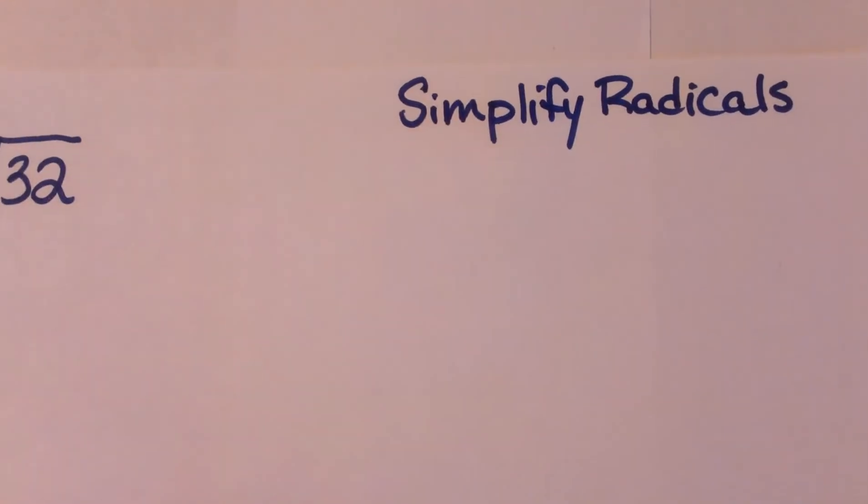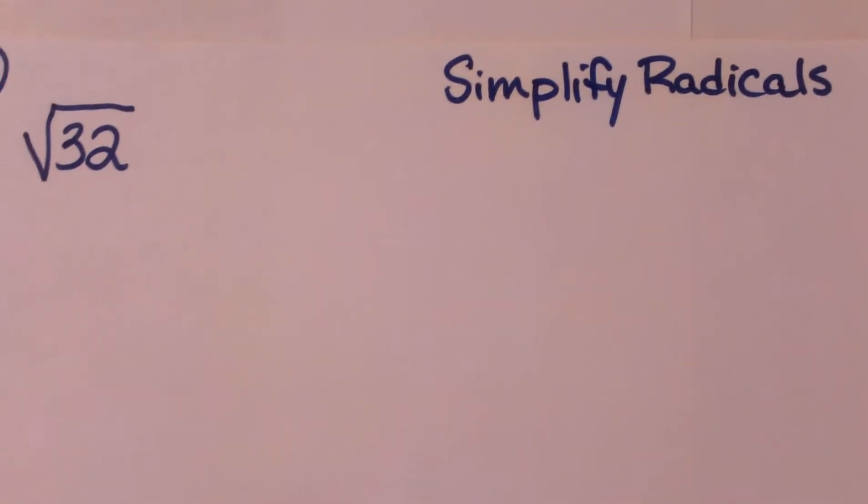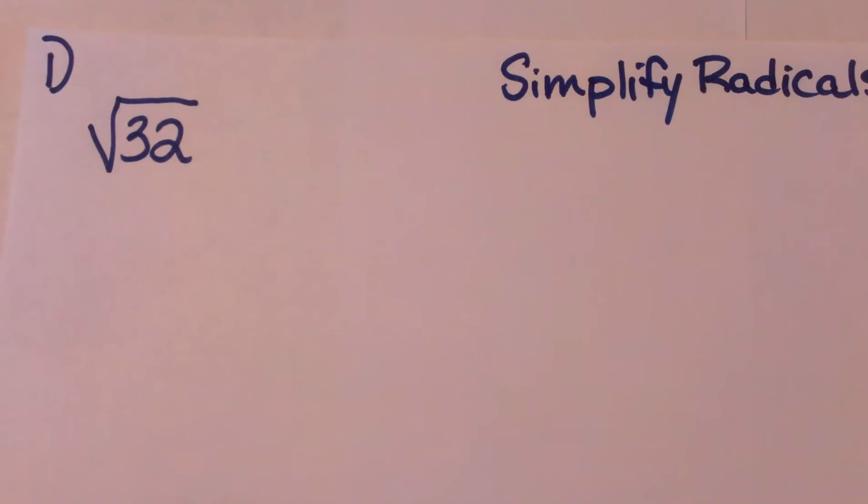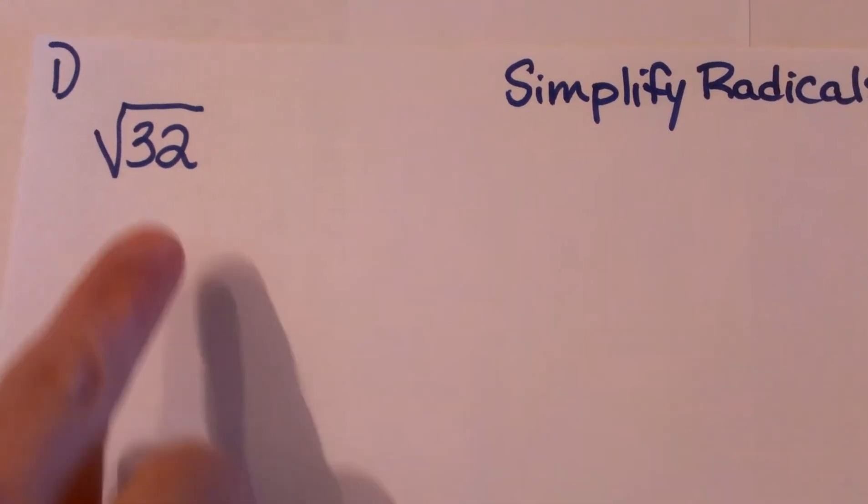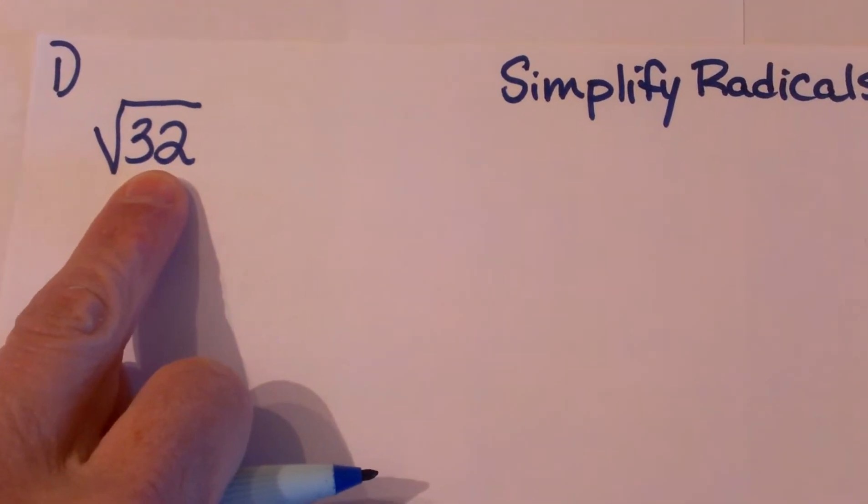Today we are going to look at simplifying radicals. The first one we are going to look at is the square root of 32. To simplify radicals you are looking for two numbers that multiply to 32.